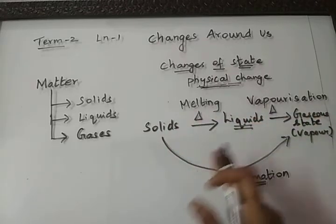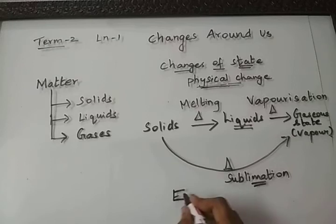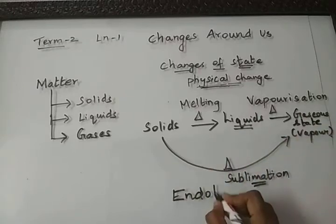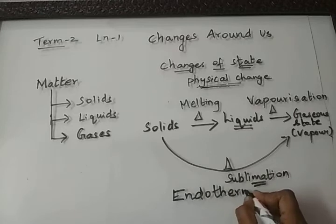All these processes—melting, vaporization, and sublimation—are endothermic processes. Endo means inside, taken inside, and therm is heat.